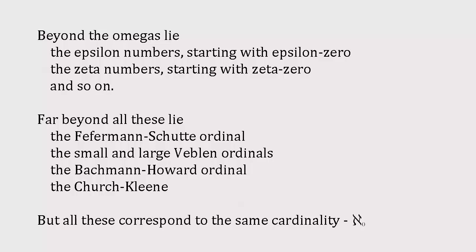The Feferman-Schütte ordinal, the small and large Veblen ordinals, the Bachmann-Howard ordinal, and the Church-Kleene ordinal, first described by American mathematician Alonzo Church and his student Stephen Kleene. The Church-Kleene ordinal is so incomprehensibly vast that there's no notation whatsoever that can reach up to it.